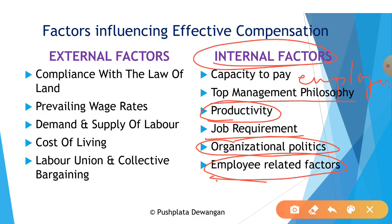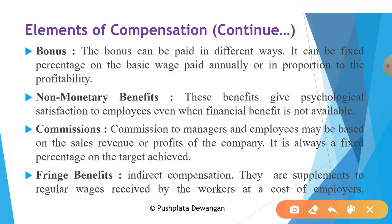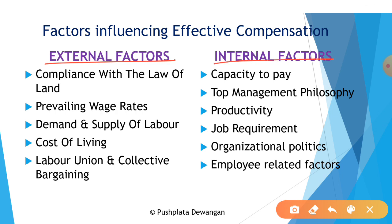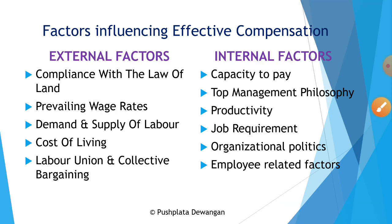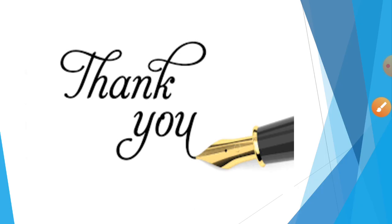The final internal factor is employee-related factors. Several employee-related factors interact to determine remuneration, including performance, seniority, experience, and the potential of the employee. These external and internal factors generally affect effective compensation in the organization. Thank you very much for listening.